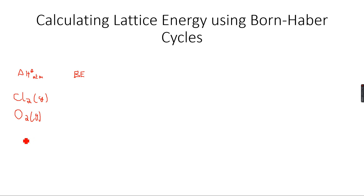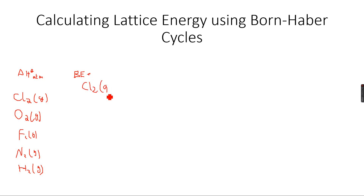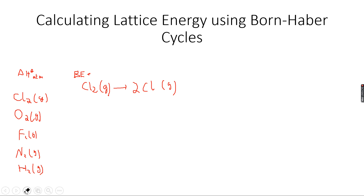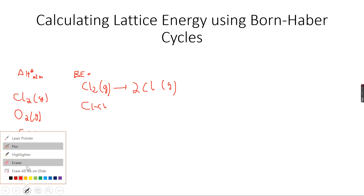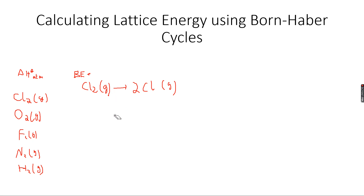All these — F2, N2, H2 — already exist as gases. If we write an equation showing bond energy: Cl2(g) → 2 Cl(g), because when we break the Cl–Cl bond we get 2 gaseous atoms of chlorine. Bond energy is the energy needed to break 1 mole of a bond. Here we have 1 bond (Cl–Cl), so 1 mole of the bond — the energy needed to break it is the bond energy.